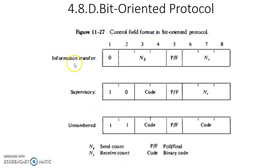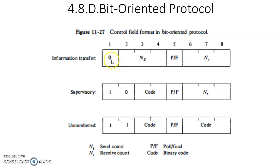The three modes are: information transfer, supervisory, and unnumbered. In the information transfer mode, control information is used to transfer data from source to destination or destination to source. This is identified by the first bit being 0. Whenever the first bit in the control field is 0, that indicates information transfer mode. If the first bit is 1, the mode could be either supervisory or unnumbered, identified by the next bit. If the first bit is 1 and the second bit is 0, the mode is supervisory; if both first and second bits are 1, it is unnumbered.